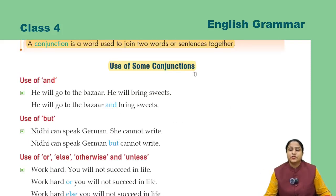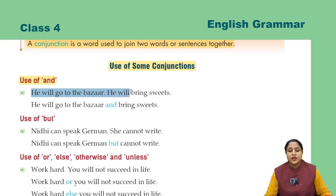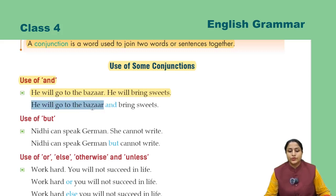Use of some conjunctions. Kuch conjunctions ka use. Use of 'and' — 'and' ka use. He will go to the bazaar, he will bring sweets. Ab inhe 'and' se join karate hain: He will go to the bazaar and bring sweets.